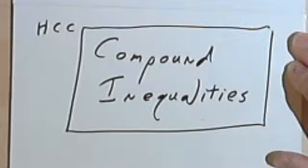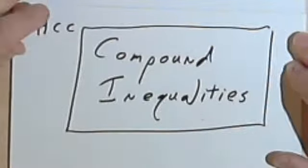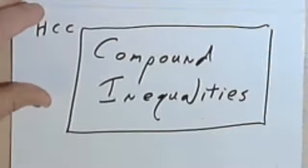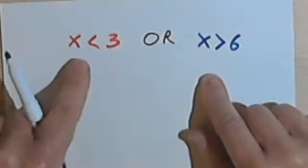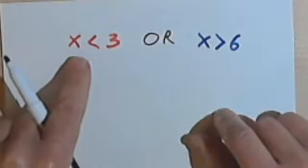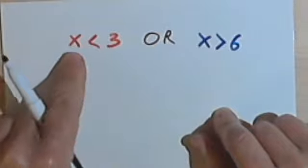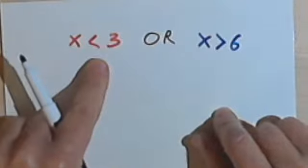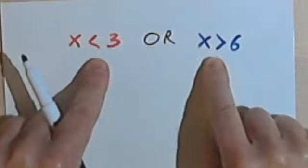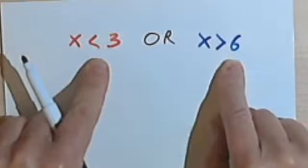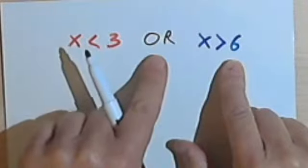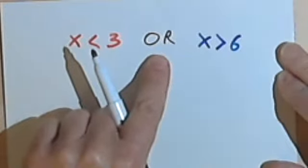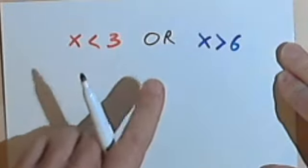This video is going to be about compound inequalities. Let's say you've got two inequalities: x is less than 3, written in red, and x is greater than 6, written in blue. And I also have this word OR. I'm going to have to talk about the word OR, but I'm not ready for that yet.